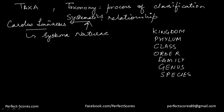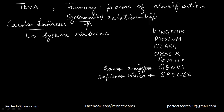Species is the fundamental unit of this classification. For example, mango — the species was indica, so it is Mangifera indica. For humans, that was sapiens, and the genus was Homo. The scientific name of the lion is Panthera leo, so Panthera is the genus and leo is the species.